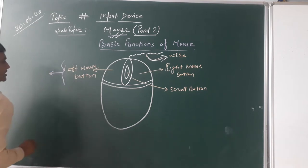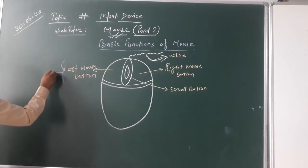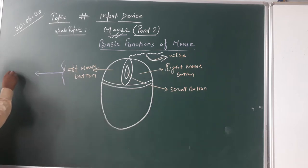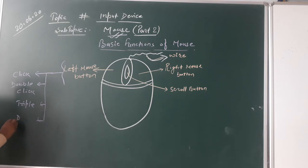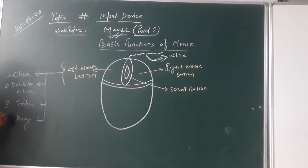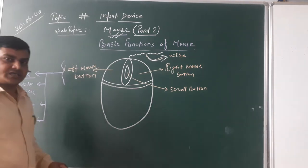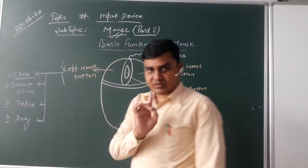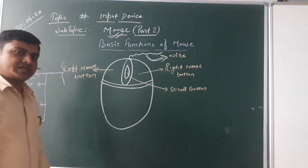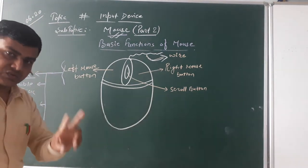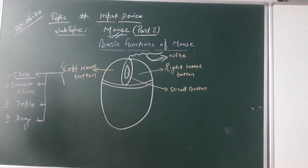The left mouse button normally has four functions: click, double click, triple click, and drag. Click refers to pressing the left mouse button one time, which is normally known as a single click. When the left mouse button is clicked two times quickly, that is known as a double click.